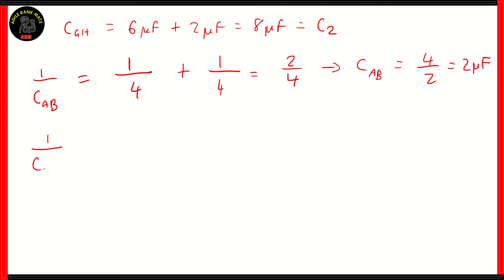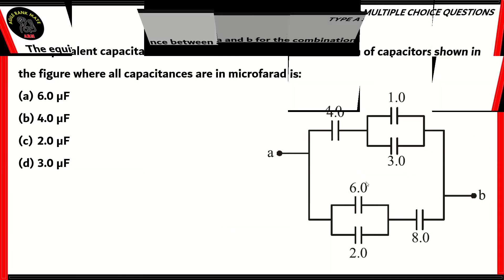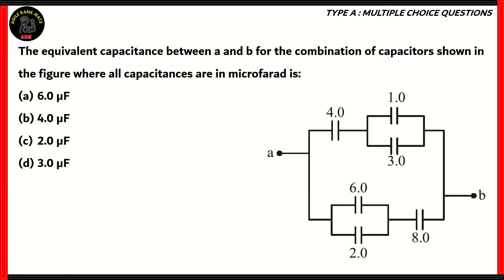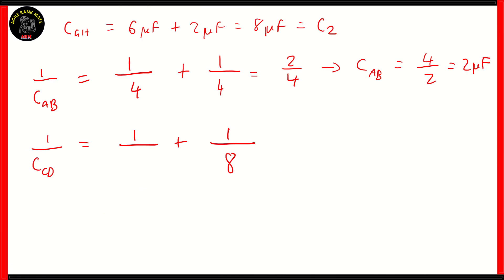Similarly, 1 over the equivalent capacitance across CD will be equal to 1 upon 8, plus the equivalent found for GH. It'll be 6 plus 2, that's 8. So, 1 upon 8 plus 1 upon 8, which gives you 2 upon 8. Taking its reciprocal, the equivalent capacitance across CD will be 8 upon 2, which is 4 microfarad.